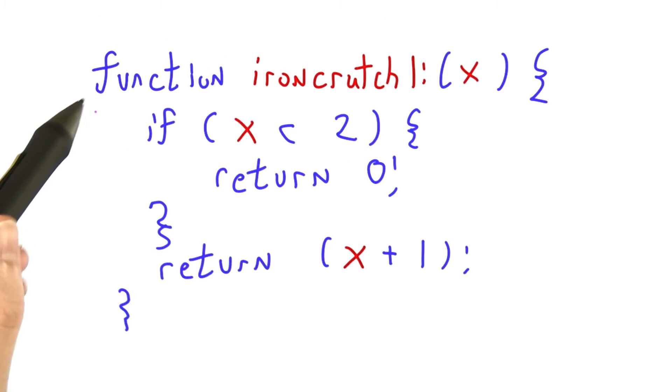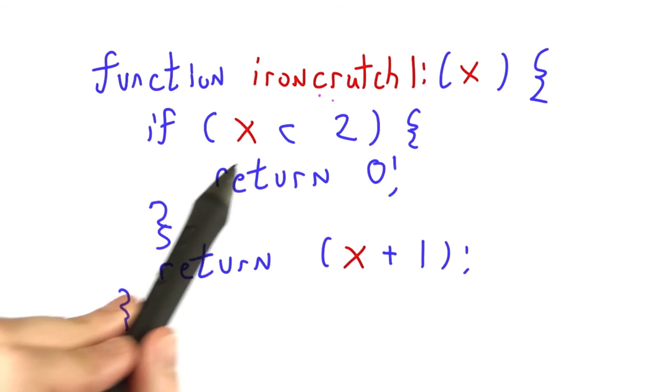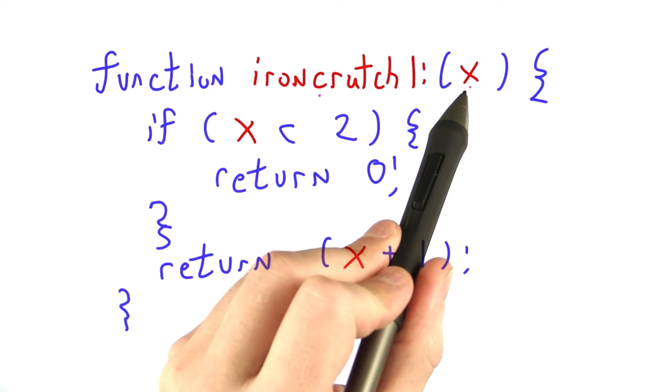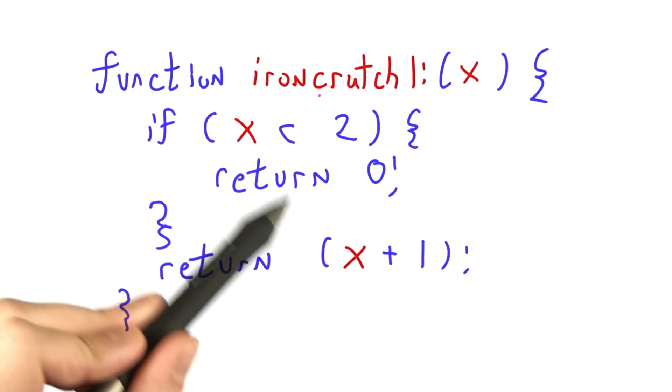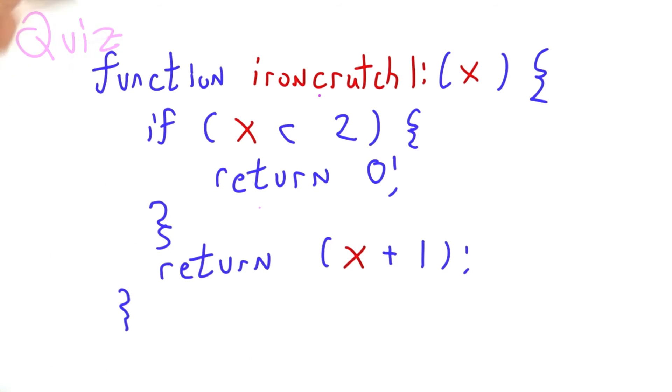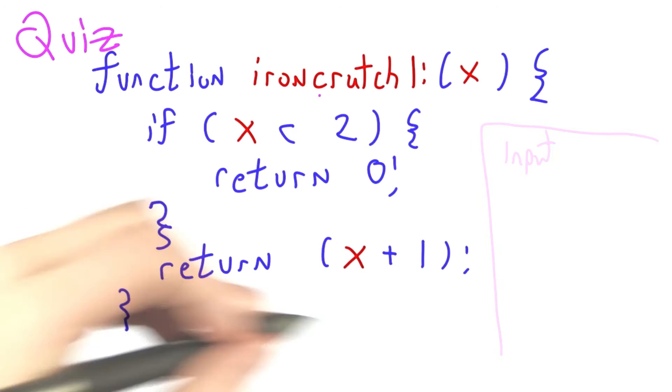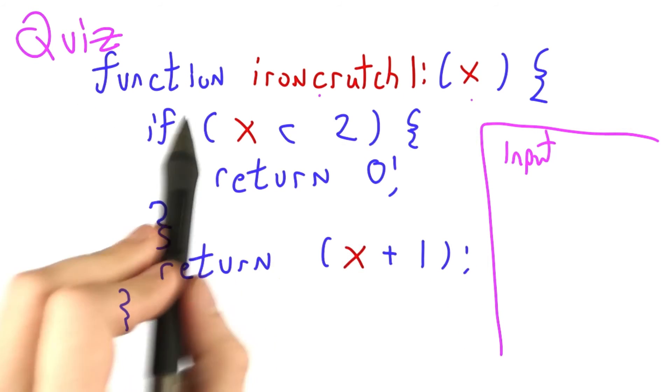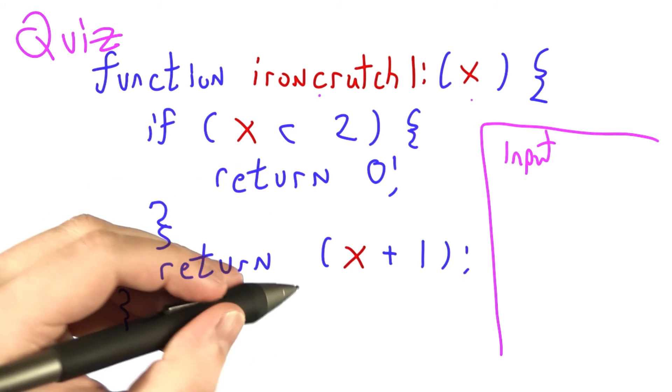So here, I've written a new JavaScript function called Ironcrutch Lee. This one is not recursive, but it takes a formal argument x, and then does some reasoning based on x, and returns values as a result. I want to make sure that you're following along with JavaScript.